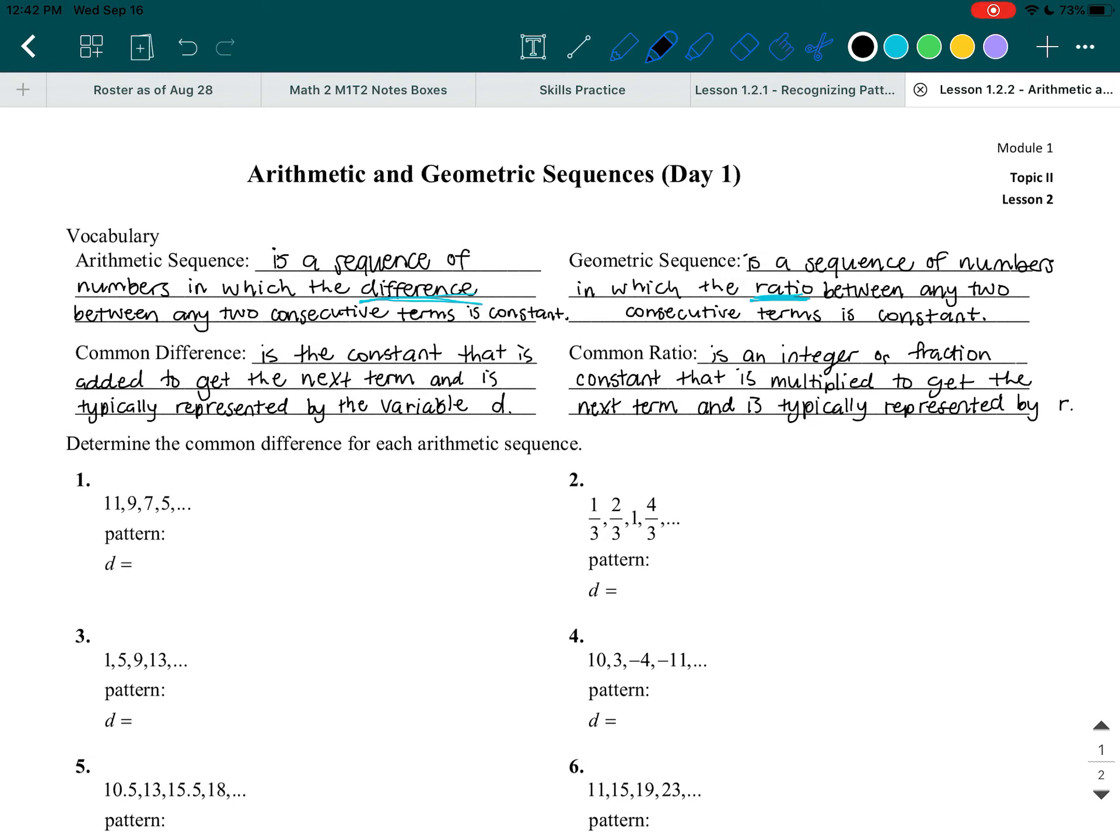So let's start off with these first set of problems over here. So according to our instructions, which we always have to read, it says determine the common difference for each arithmetic sequence. So right now we're only dealing with arithmetic sequences. So you know that we're going to deal with the sequence of numbers in which the difference between any two consecutive terms is constant.